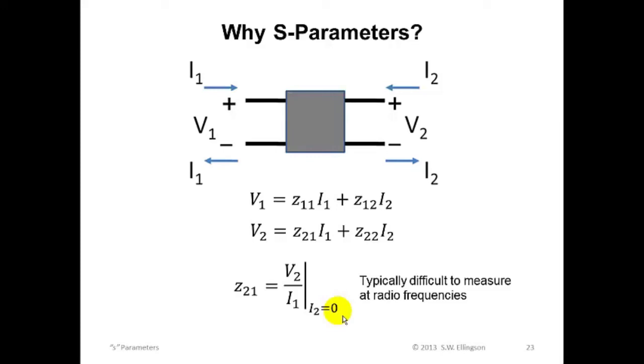The S-parameter scheme avoids this problem by allowing us to measure and analyze devices at input and output impedances close to those at which the device is intended to operate. And that avoids the problem of the fact that the device can change its behavior when we measure it using unusual or extreme impedances.